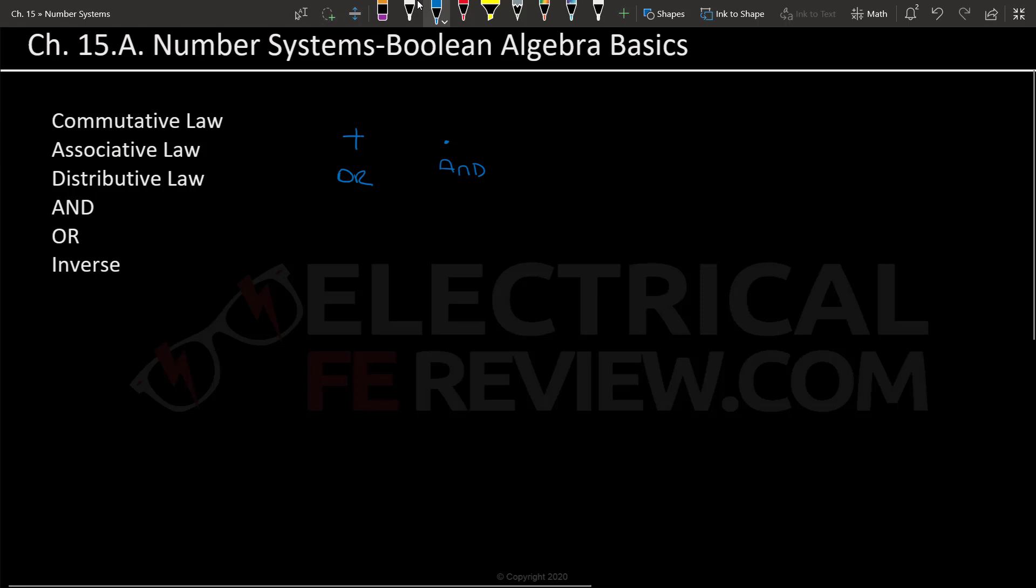Let's start with commutative law. This law states that no matter the order of the operation the outcome will be the same. In other words, A AND B is equal to B AND A. Also B OR A is equal to A OR B. So that's pretty straightforward. It's what we have in regular algebra.